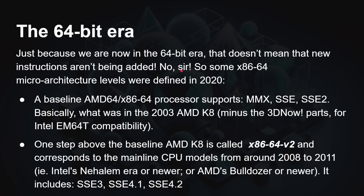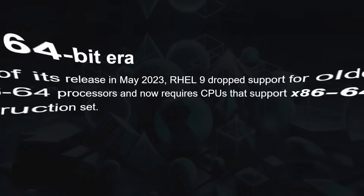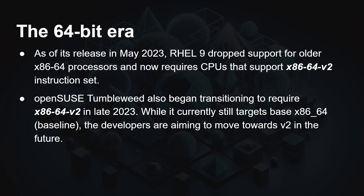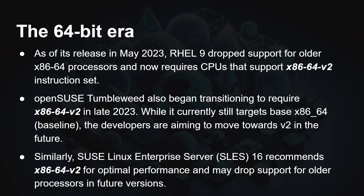One step above the baseline AMD K8 is called — and here's where we get this term — x86-64v2. It corresponds to mainline CPUs from around 2008 to 2011, such as the AMD Bulldozer. It includes SSE3, SSE4.1, and SSE4.2. As of May 2023, Red Hat dropped support for older baseline x86-64 processors and now requires x86-64v2. OpenSUSE Tumbleweed also began transitioning to require v2 processors in late 2023. Similarly, SUSE Linux Enterprise Server recommends v2 for optimal performance and may drop support for older processors in the future.